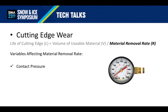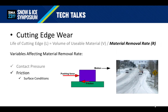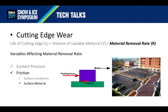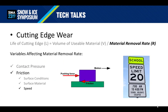Now let's talk about material removal rate. This is a little more complex — there are many variables that affect it. The first is contact pressure, or the amount of pressure being placed on the cutting edge. The second is friction, which is the result of many factors, one of which is surface conditions. Snowy and icy conditions have less friction. Surface material will also impact friction — blacktop, pavers, or concrete will have different friction values. The other factor to consider is speed: the faster you're traveling, the less friction is involved. It seems counterintuitive, but it's true.